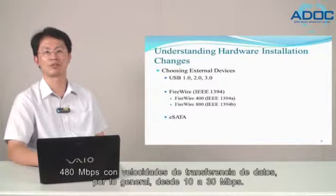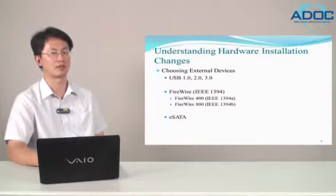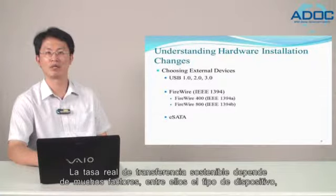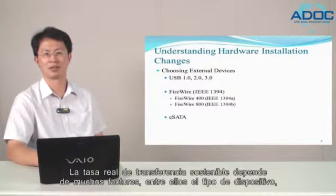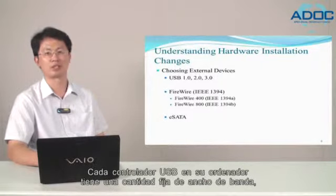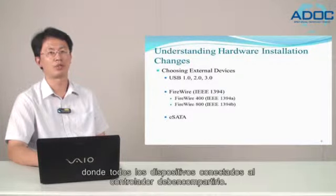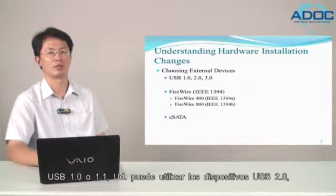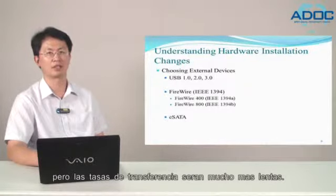The actual substantial transfer rate is usually from 10 to 30 Mbps, depending on many factors including the type of device, the data you are transferring, and the speed of your computer. Each USB controller on your computer has a fixed amount of bandwidth, which all devices attached to the controller must share. If your computer's USB port is an earlier version, USB 1.0 or 1.1, you can use USB 2.0 devices, but the transfer rates will be significantly slower.